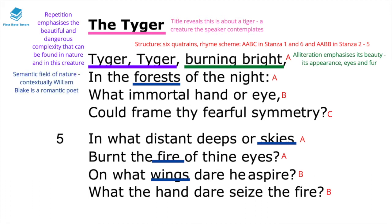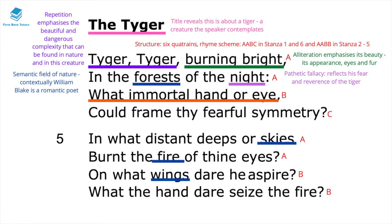This belongs to a semantic field of nature. Contextually speaking, William Blake is a Romantic poet whose focus is very much to do with nature and its beauty, but also its scary element — how nature, whilst quite beautiful, cannot be taken for granted and can also be quite dangerous. The mention of 'in the forest of the night' uses pathetic fallacy — night reflects the speaker's fear and reverence of the tiger.